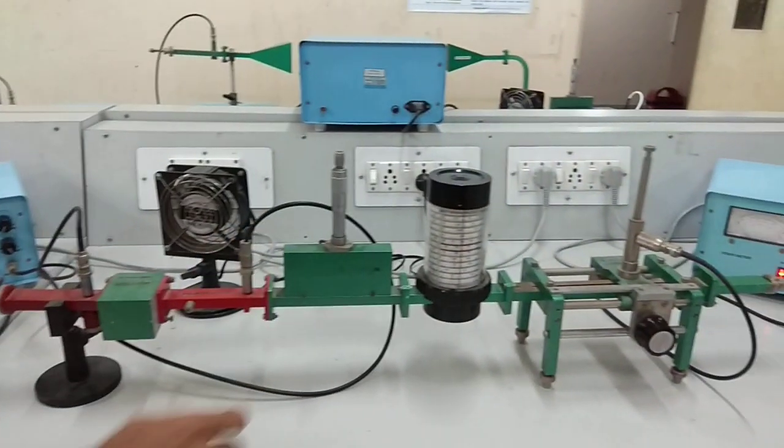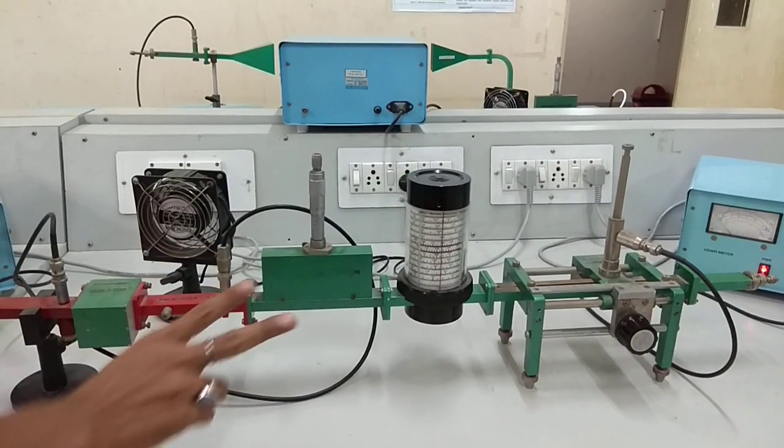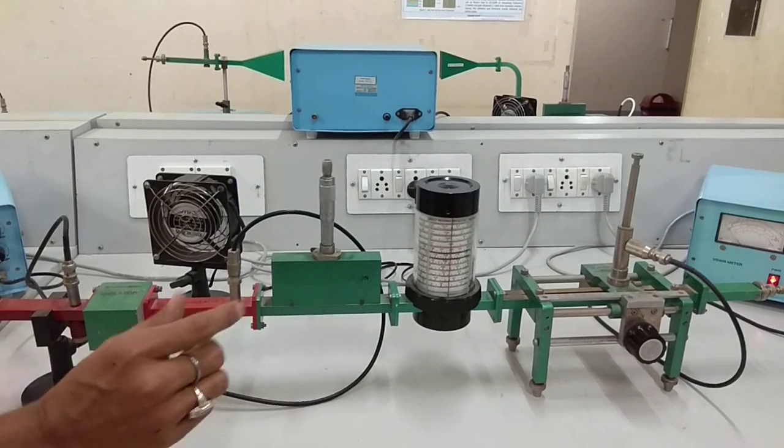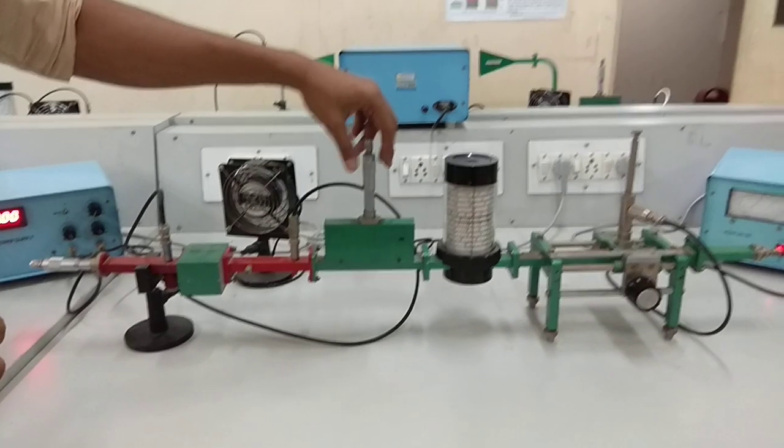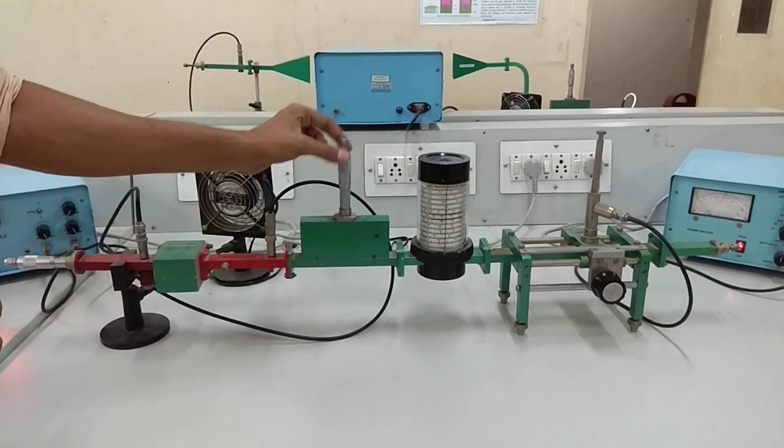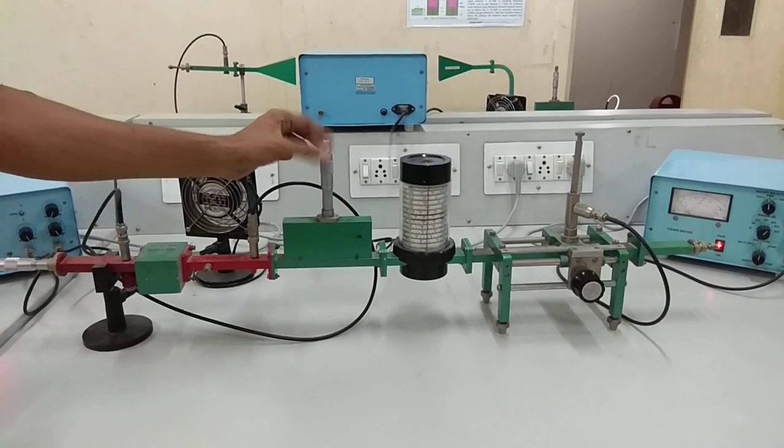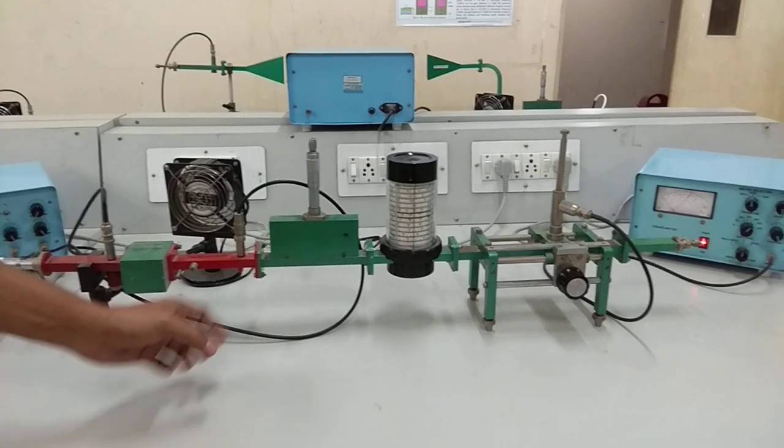Another component is the attenuator. There are two attenuators: one is called a fixed attenuator, and one is variable. Variable means when we rotate the knobs, we can control the magnitude of the signal. That attenuator is called a variable attenuator.